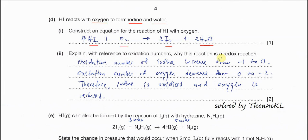Iodine is changed from negative one to zero. Oxygen changed from zero to negative two. You must mention these two changes. Therefore, we know that iodine is being oxidized and oxygen is being reduced, because oxidation number increases and oxygen's oxidation number decreases.